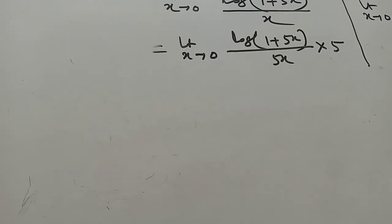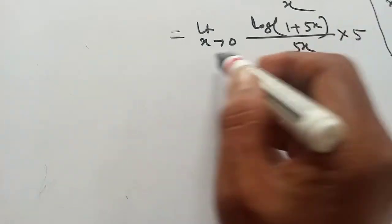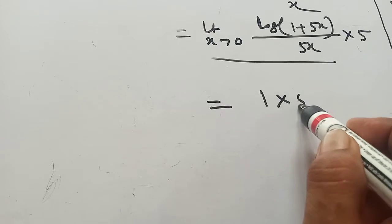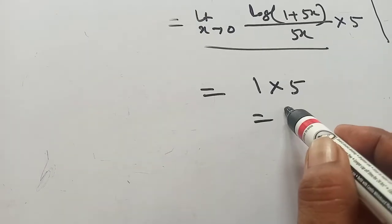Log(1 plus x) by x equals 1. Now this part, according to the formula, is 1 times 5. That means this is 5.